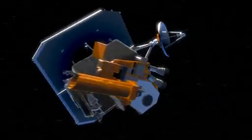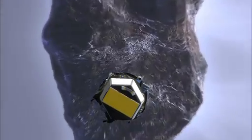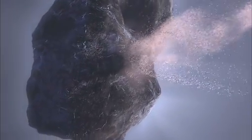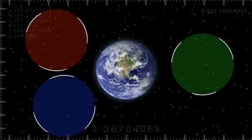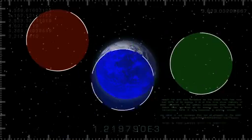Remember the Deep Impact mission, the NASA spacecraft that slammed a probe into a comet in 2005? Well now it's headed for another comet. While on its way we used its instruments to study the amount of red, green and blue light reflected by Earth, the Moon and Mars.